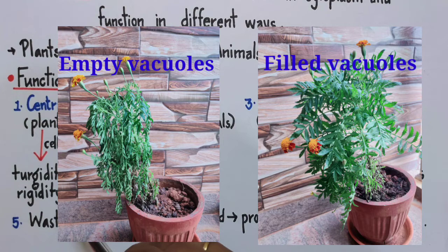Then I watered the plant, and after about three hours I clicked the second photo. In the second picture, you can observe that when all the vacuoles get filled with water, the leaves have regained their original shape and size, thereby indicating the importance of central vacuole in maintaining the turgidity of plant cells.